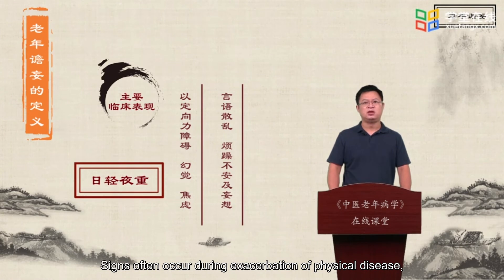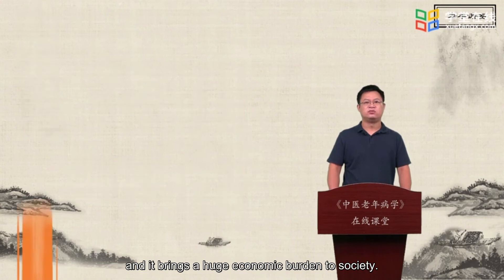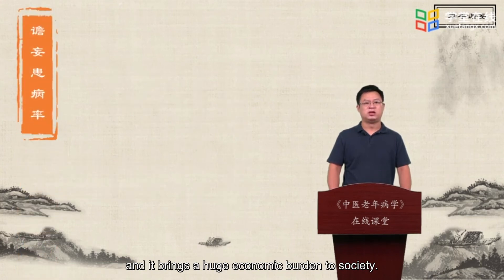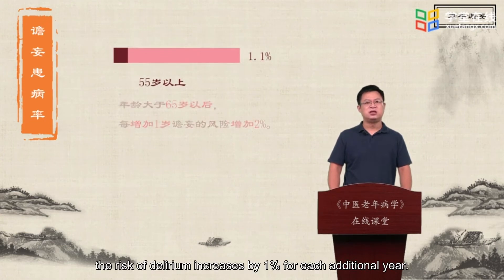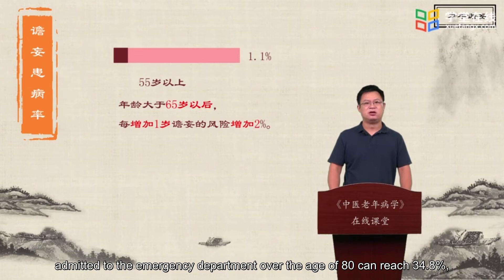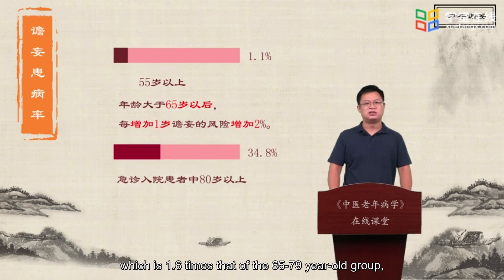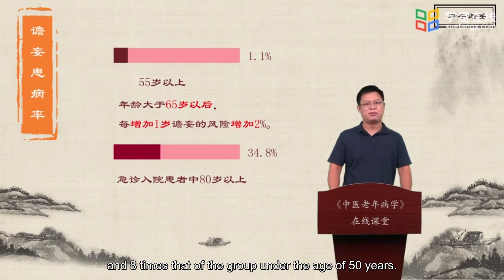Signs often occur during exacerbation of physical disease, infection, ischemia and hypoxia, during or after surgery. The incidence of delirium is very high among the elderly, and it brings a huge economic burden to society. For the general population over 55 years old, the incidence of delirium is 1.1%, but after age 65, the risk of delirium increases by 1% for each additional year. The overall incidence among patients admitted to the emergency department over the age of 80 can reach 34.8%, which is 1.6 times that of the 65-79-year-old group, 2.3 times that of the 50-64-year-old group and 8 times that of the group under the age of 50 years.